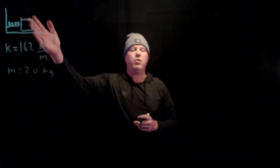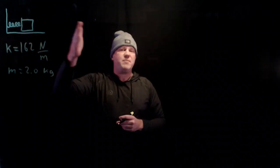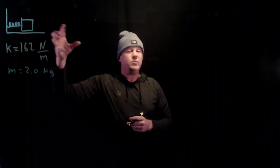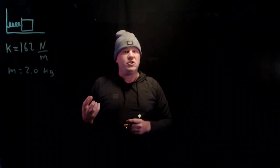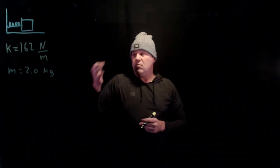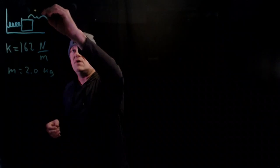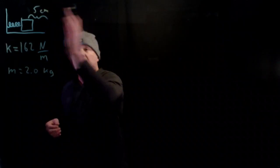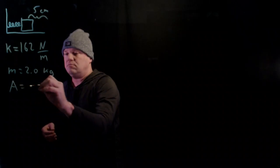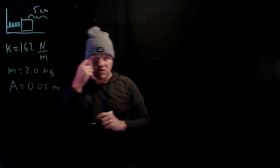We're going to pull it to the right a distance of 5 centimeters, and it'll bounce back and forth 5 centimeters to the right, 5 centimeters to the left of its equilibrium position. That's the amplitude. If I pull it to the right 5 centimeters and release it from rest, that is the amplitude. We'll convert that to meters: A = 0.05 meters.